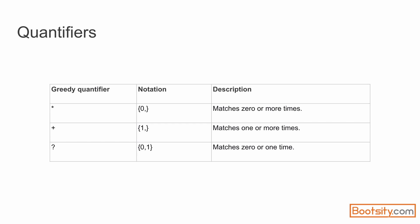We've seen how different quantifiers work — star, plus, and question mark. By now you should see that these quantifiers can be written in curly brace notation. Star, which matches zero or more times, can be written as {0,}. Plus can be written as {1,}, matching from one to infinite. Question mark can be written as {0,1}, matching zero or one time. That covers quantifiers — I'll see you soon.